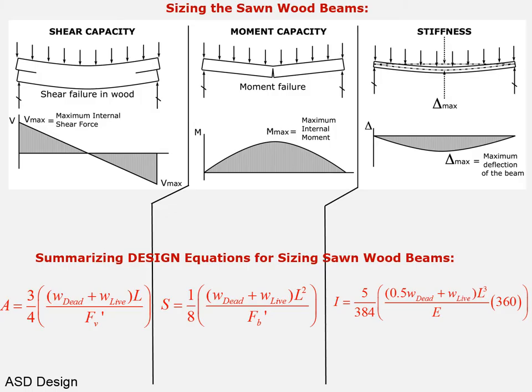In a previous video we did sizing of sawn wood beams which is pertinent to our discussion here because sawn wood beams have rectangular cross sections as do LVL beams. All the sizing procedures that we set up for sawn wood beams would apply equally well to laminated veneer lumber beams.